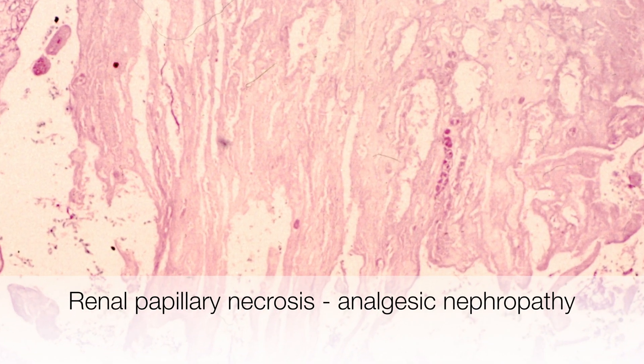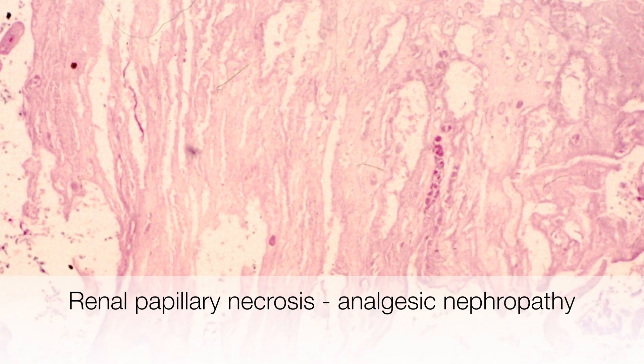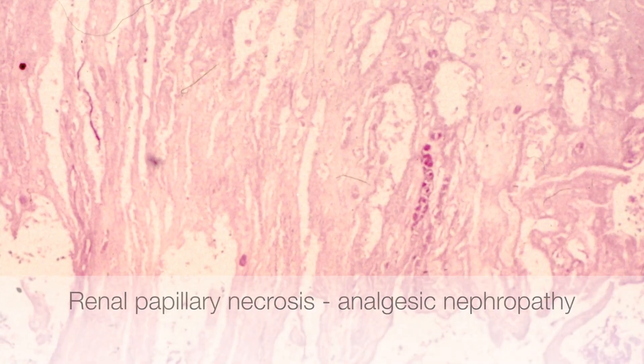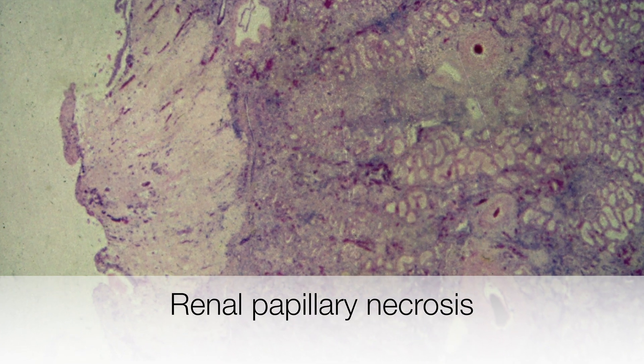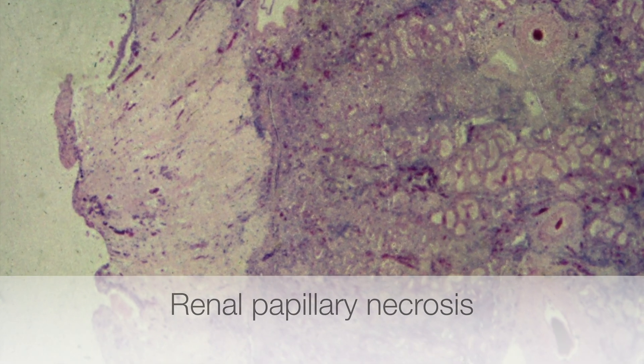This is a section of kidney from a patient with analgesic nephropathy, and you can see the structureless papillae as we are zooming into them. This is another example of renal papillary necrosis, and you can see how sharply defined the necrotic papillae are from the viable kidney.